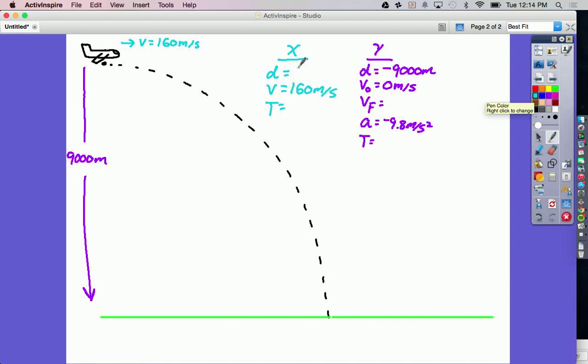The question is asking how far ahead of that target should the plane be. Basically, how far is the bomb going to go before it hits the ground 9,000 meters below? So that is our distance in the X direction. Now we're looking for something in the X direction. We don't have enough information to solve. We need time, so we're going to go in the Y direction and solve for time.